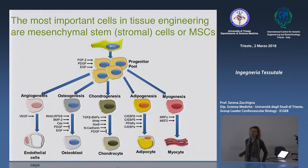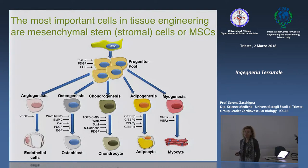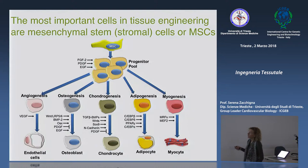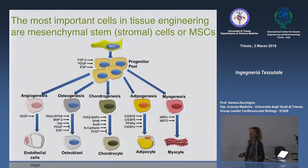Qual è la cellula più utilizzata oggi nelle sperimentazioni cliniche di ingegneria tessutale? Quella che veniva definita cellula staminale mesenchimale, che oggi non si chiama più così perché ci si è resi conto che di staminale queste cellule hanno molto poco. Oggi si tende a chiamarle, senza cambiare l'acronimo, cellule stromali mesenchimali, perché di fatto sono cellule stromali del midollo osseo, che sanno fare osso, cartilagine e tessuto adiposo, e queste sono le applicazioni per cui vengono utilizzate anche in clinica.